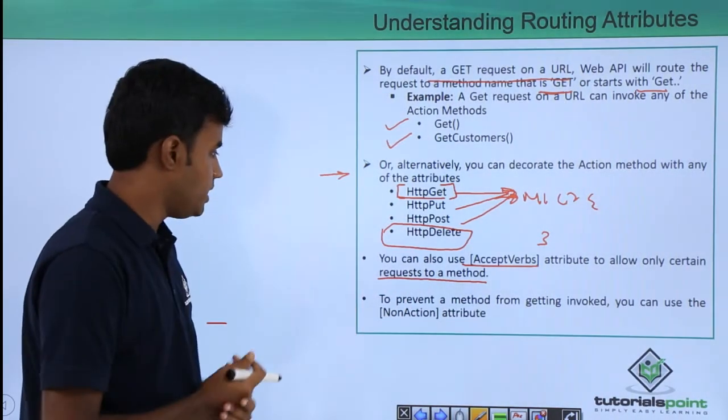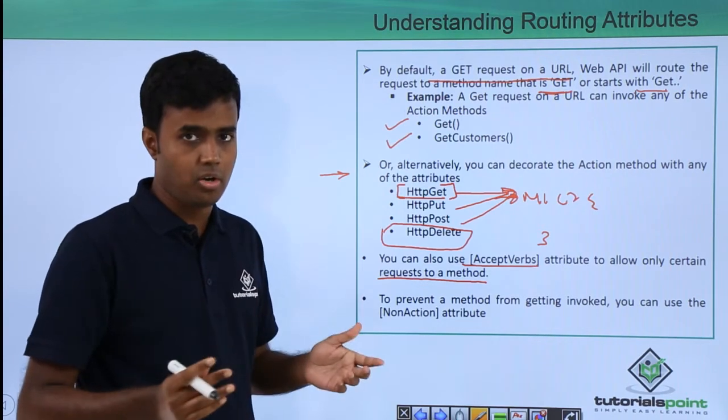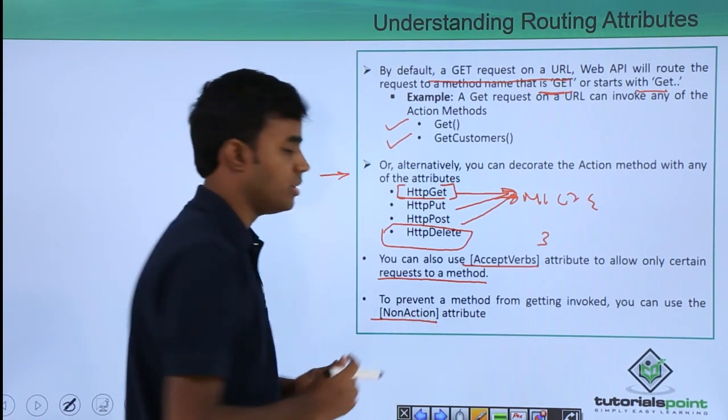To prevent a method from getting invoked at all, you can use the non-action attribute.